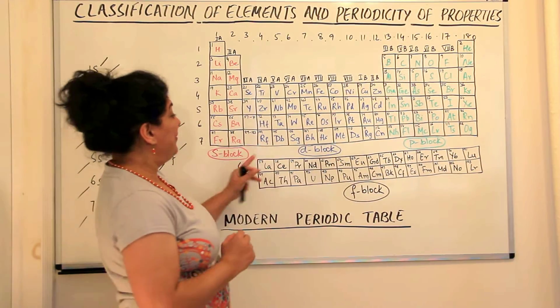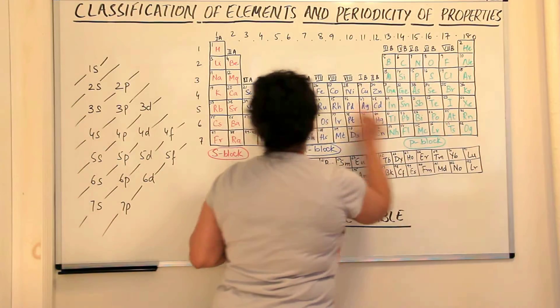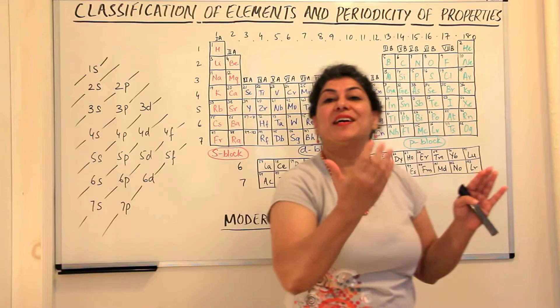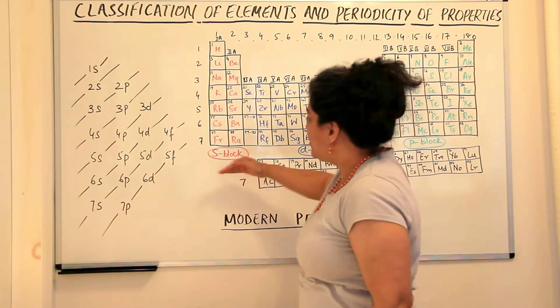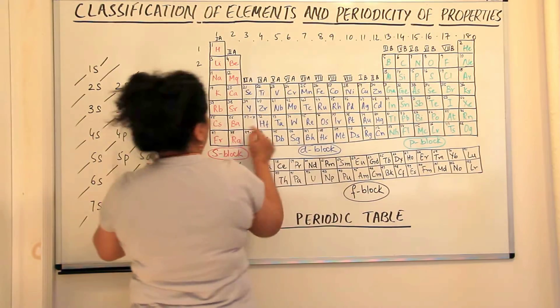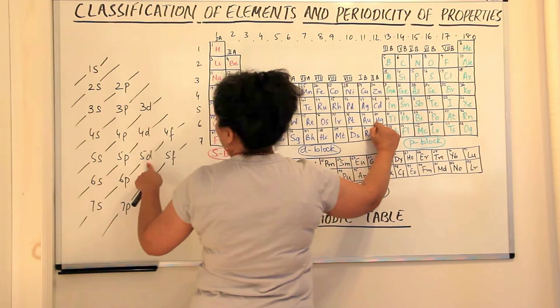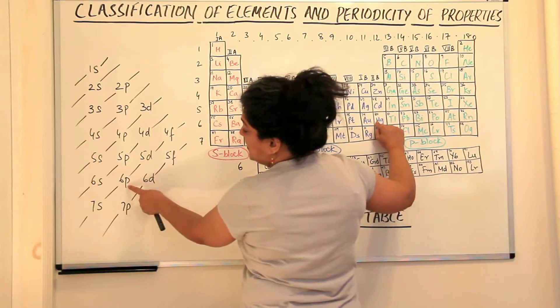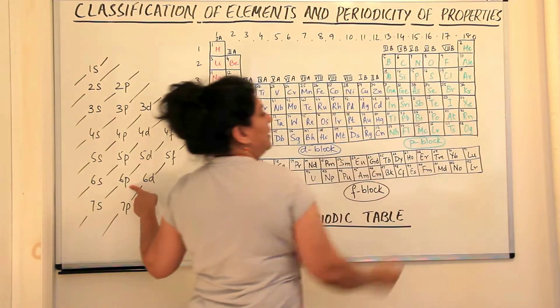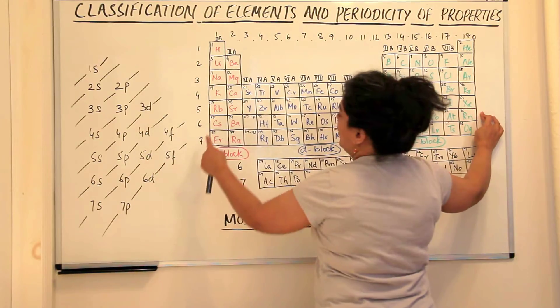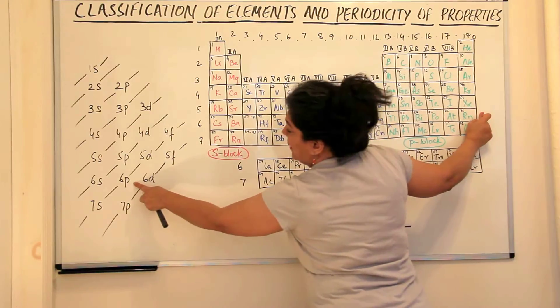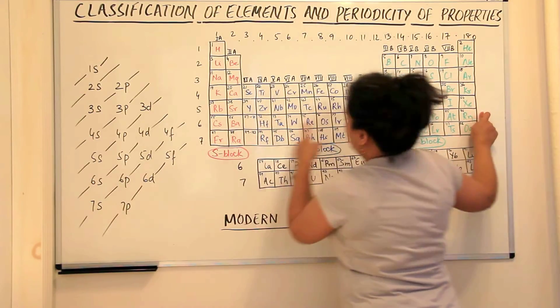So the next 14 elements would go to the 4f and after 4f, it is the 5d which is being filled up here. And after 5d gets completely filled, the next electron moves to 6p. Therefore these six elements belong to the sixth shell and the p orbitals are being filled up and after 6p fills up, it is then the 7s which fills up.